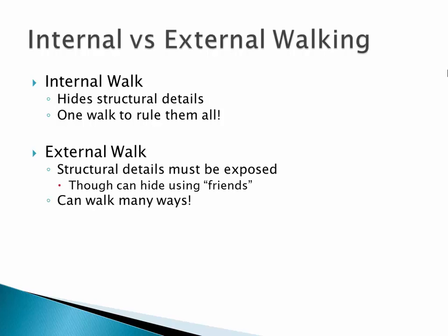So what we can do is move to an external walk, where the algorithm is on the outside. Now in order to do that, you have to expose some structural details — in particular, the left and the right have to be accessible, so we add getters for get-left and get-right. But this allows you to change your walk in any way you want: walk it to print, walk it to create a sum or an average, or any number of things.